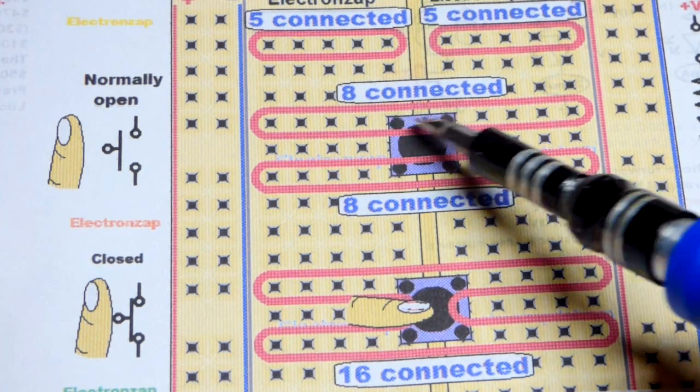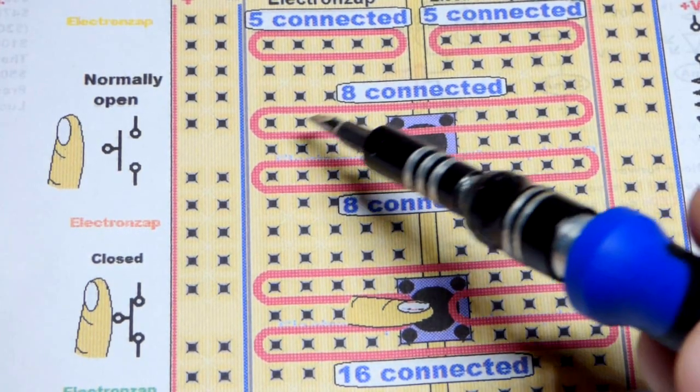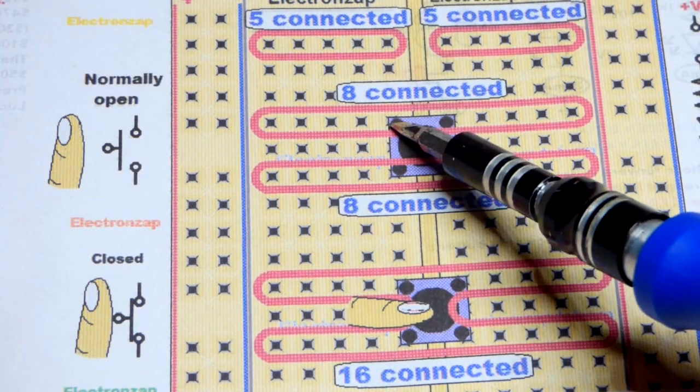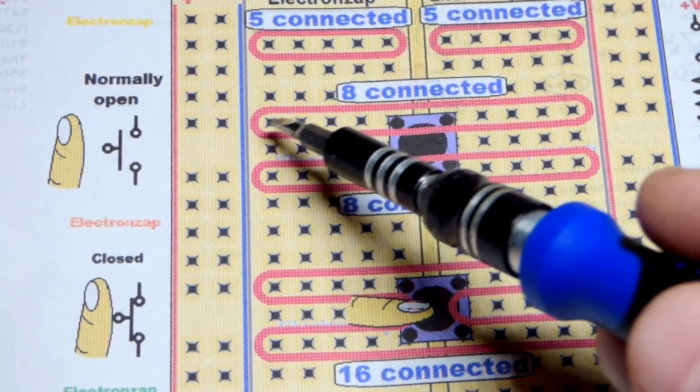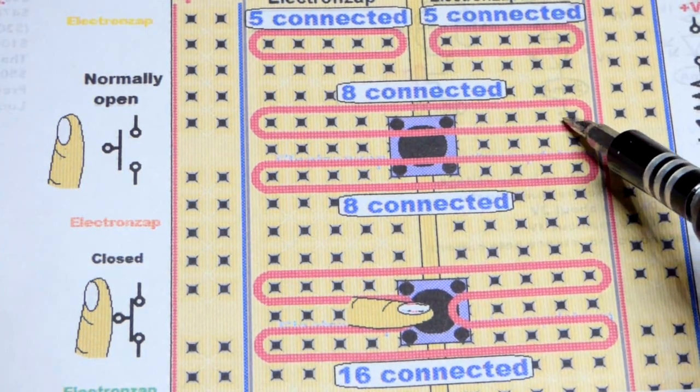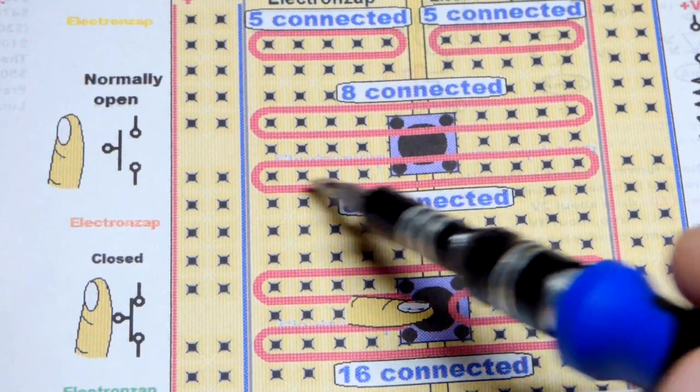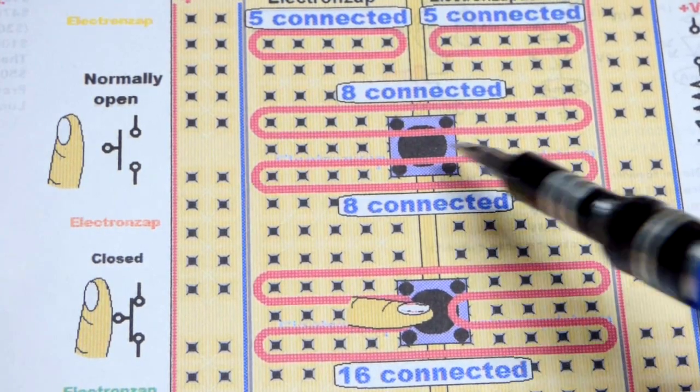But in any case, there's always a connection across the top two. There's always a connection across the bottom two. So now we have, since we're taking up two of the slots, we have four free slots on that side and four free slots on that side that are all now connected. So there's eight connected, and there's eight connected down here.